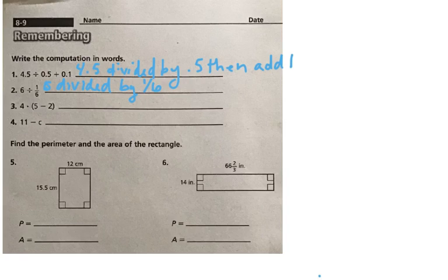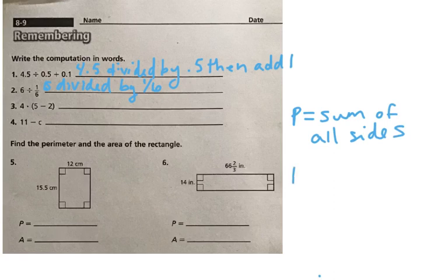Numbers 5 and 6 are a review of what we did last week. And if you need a little help on those, look at your problems from 8-8 and they are the same thing. Remember, finding perimeter means that you're adding up all of the sides. And so perimeter is equal to the sum of all sides. And then to find area, you're going to simply multiply length times width. You should be able to get through those pretty easily today.